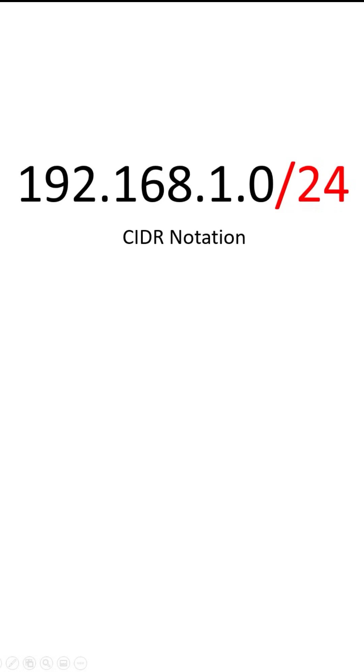What's up everybody, Cyber Mentor back again for part two of our subnetting lesson. If you recall from the first video, we have CIDR notation. In this example, we have a slash 24 network, which means we have 24 on bits and eight off bits.